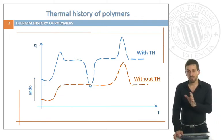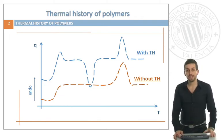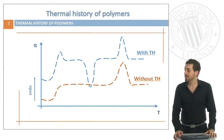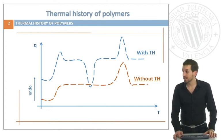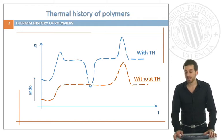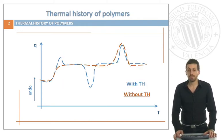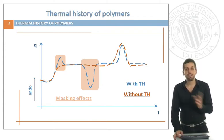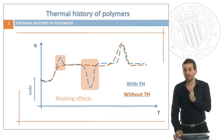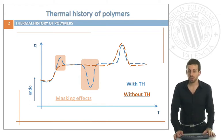Let's have a look at one example. In the blue scan we can see the response of a DSC of a polymer with thermal history, and the red one is without thermal history. If we superimpose them we can see these masking effects, so we have to know if we are really interested in them or not.